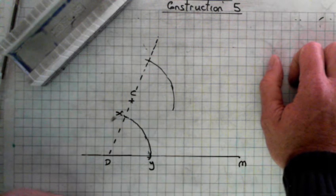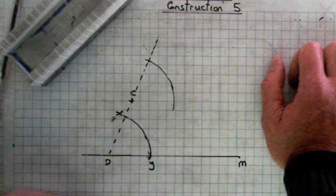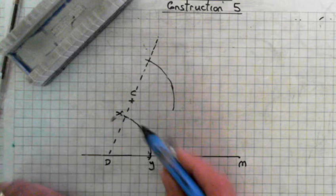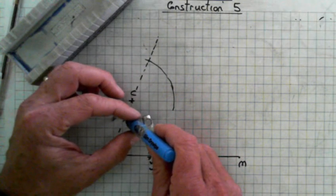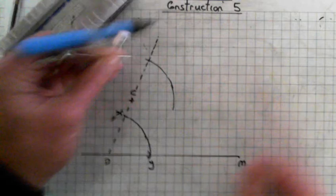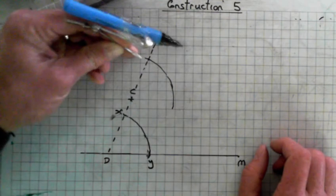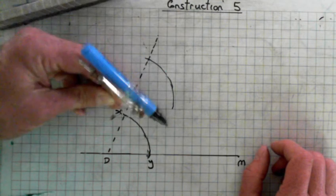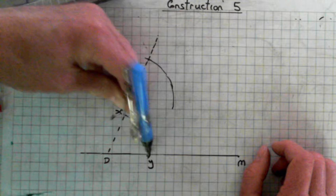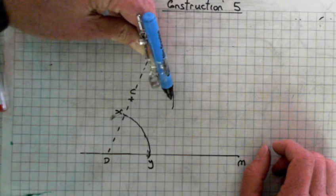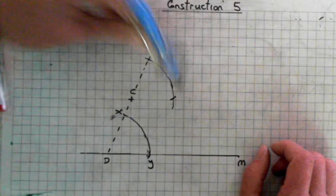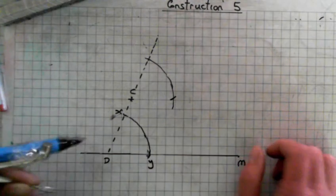All right, number five: use the compass to measure the distance between X and Y. So now we measure the distance between X and Y, and then we come up here to this point. So the distance XY, we take that distance there and we come down here, put the point of the compass there, and mark it across there.